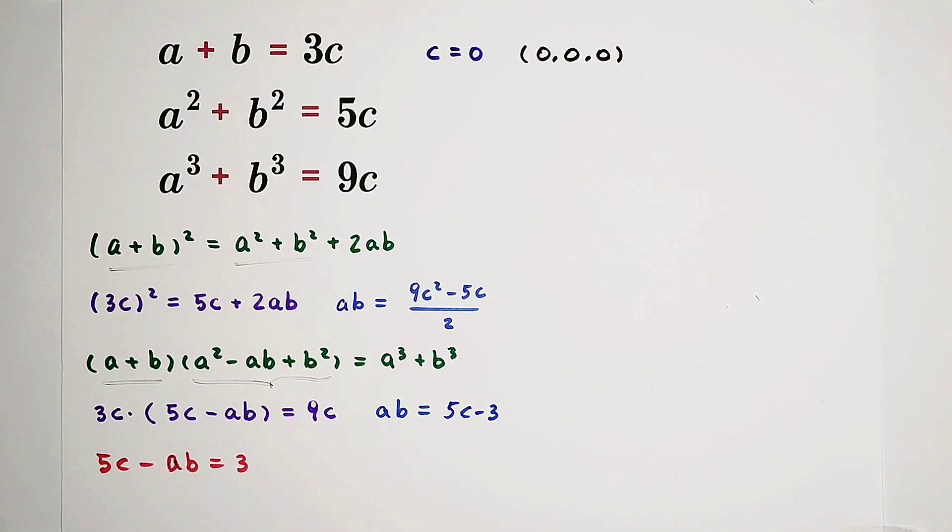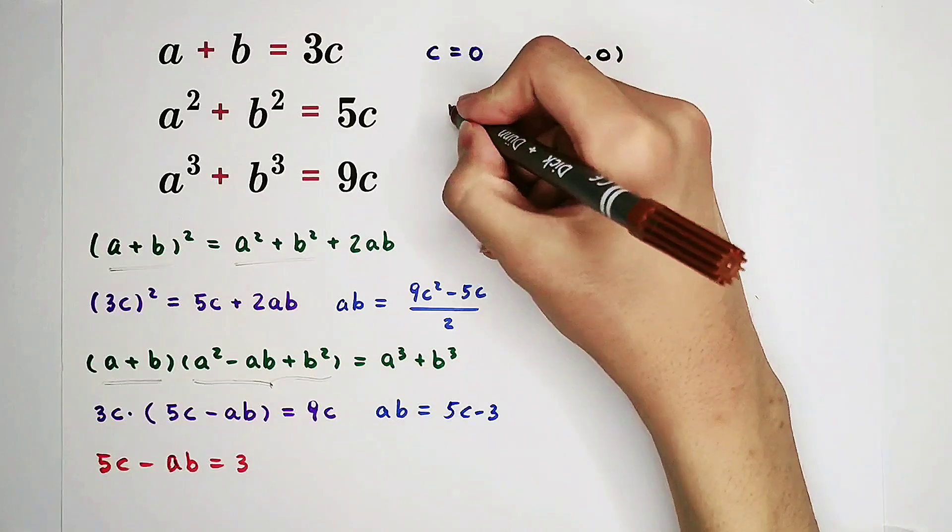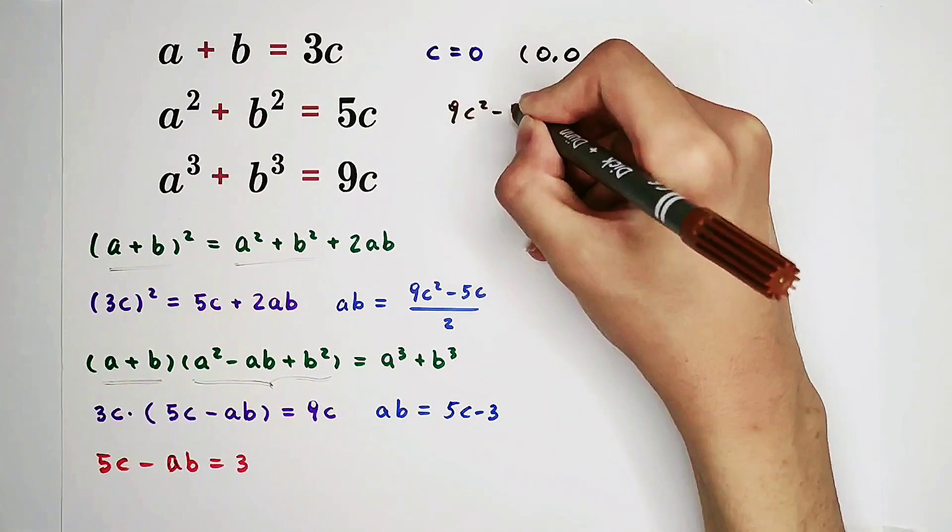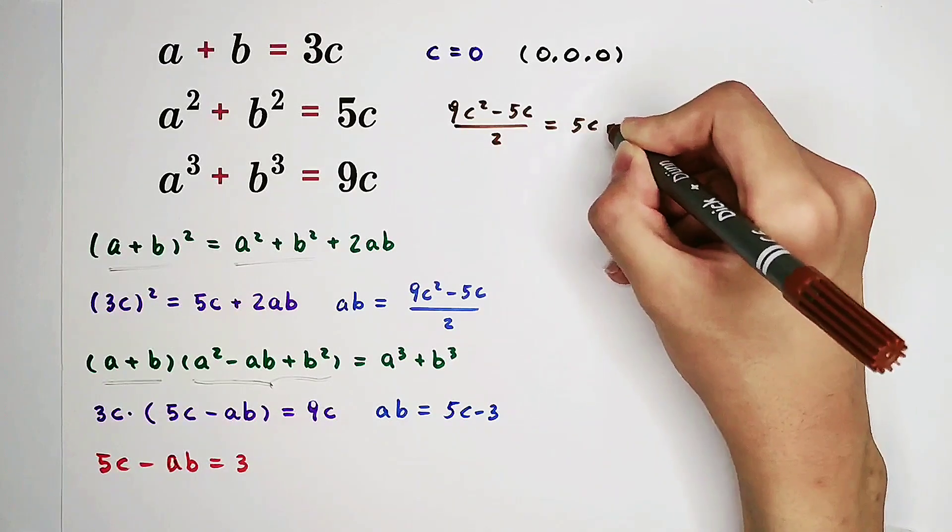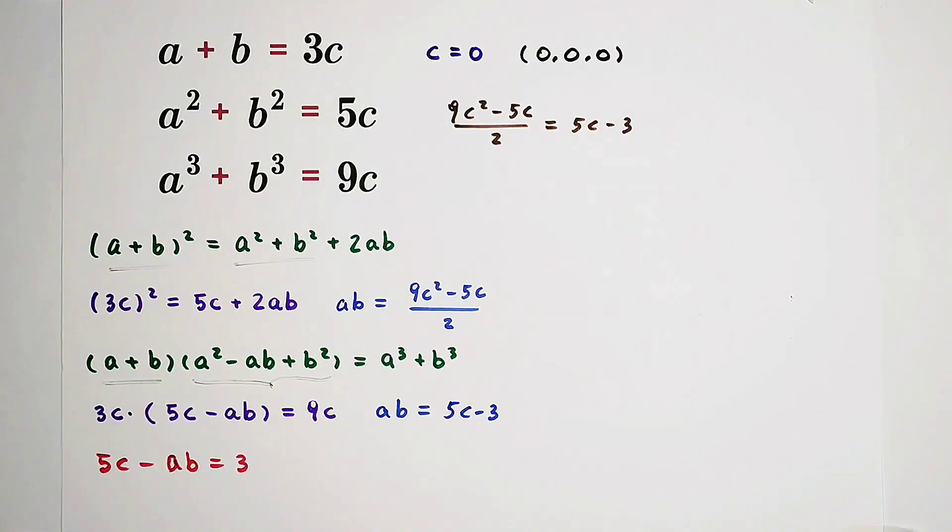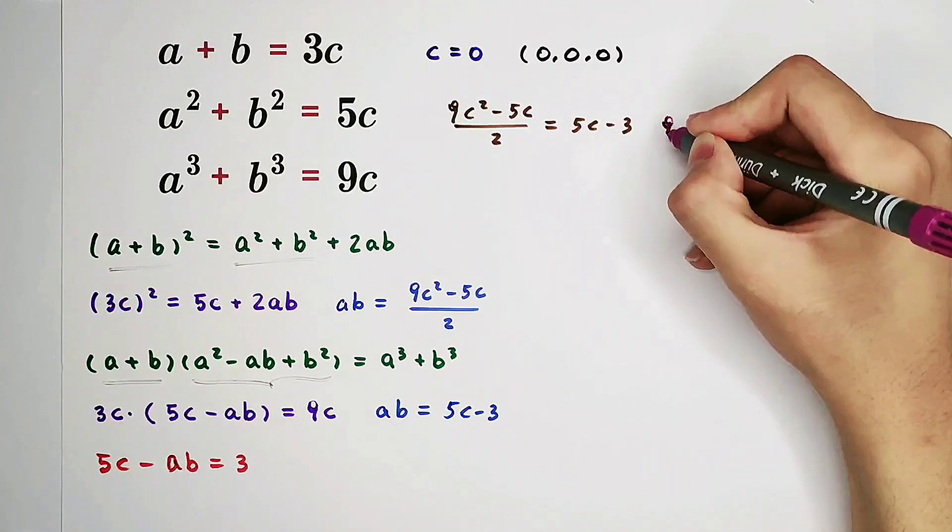Now, we can acquire an equation about c. 9c squared minus 5c over 2 equals 5c minus 3. Then, a quadratic equation about c.